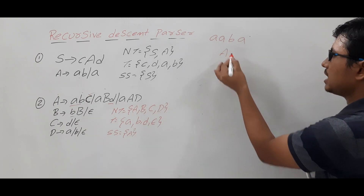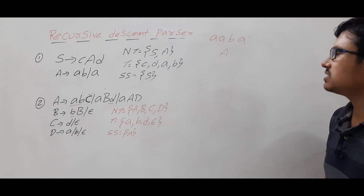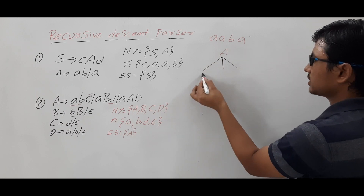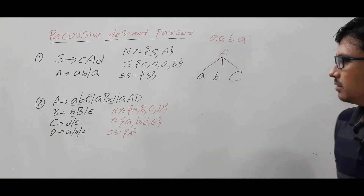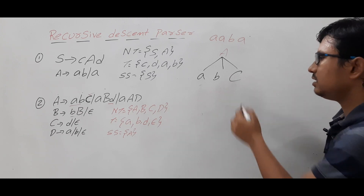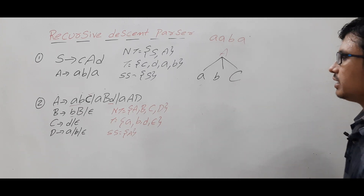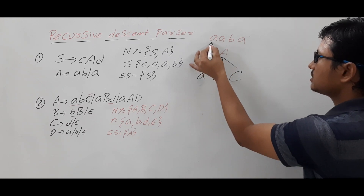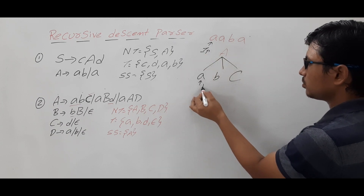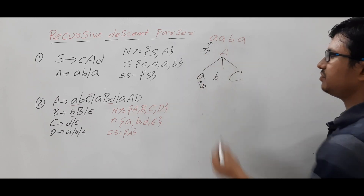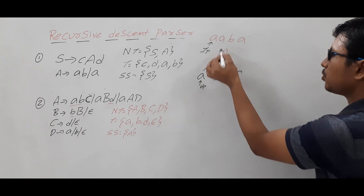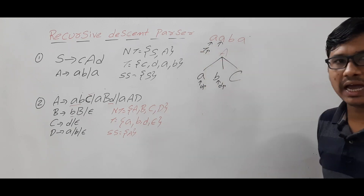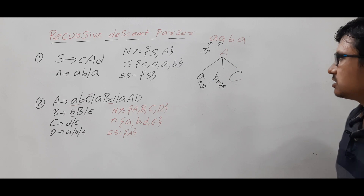It starts from the start symbol A, which is a non-terminal. It takes the first production: A → BC (where C is capital C, a non-terminal). The input pointer is pointing to 'a' and the descent pointer is also at 'a' — it's a match. The descent pointer shifts to B and the input pointer shifts. Now descent pointer is at B and input pointer is at 'a' — there is a mismatch, so it does backtracking.